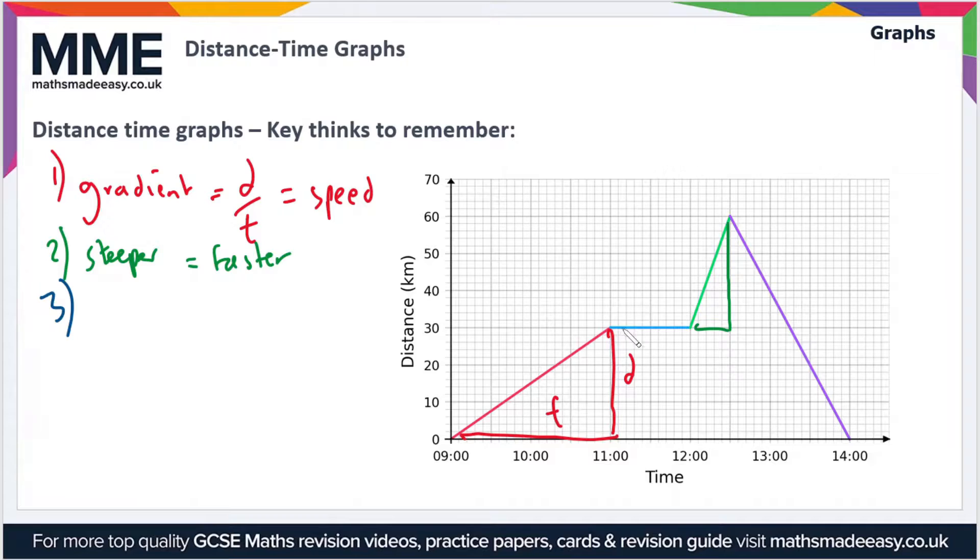The third thing you need to be aware of is that if the line is flat, then the distance isn't changing, and so what that means is that you are not moving. Distance is unchanged, so therefore you must be stopped. A flat section means you are stopped.